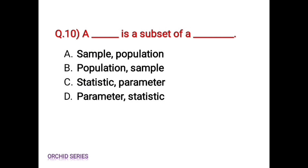Question number 10: dash is a subset of — Option A, sample and population. Option B, population and sample. Option C, statistics and parameter. Option D, parameter and statistics.